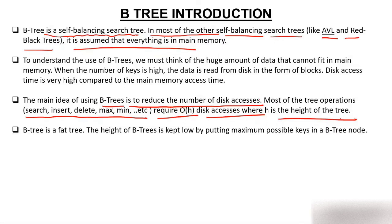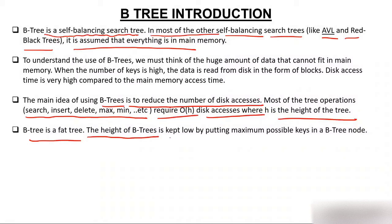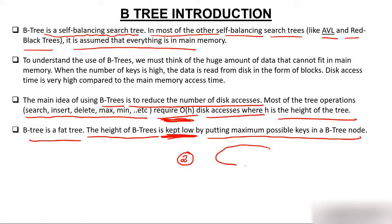Our main task is to reduce the height. B-tree is a fat tree. A fat man or fat woman always has low height — similarly, the height of B-tree is kept low. We keep h low by putting the maximum possible keys in a B-tree node. In a normal binary tree, every node has only one element, but in B-tree a node can contain more than one key — like 2, 5, 8, and 12 — which is why it is called a fat tree.